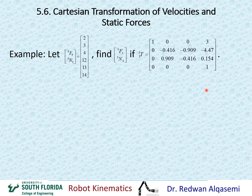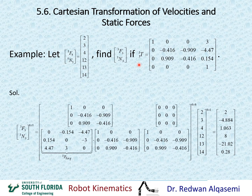For the example, we have defined forces and moments of frame 5 relative to frame 5 as [2, 3, 4] and [12, 13, 14]. We need to find these forces acting on frame 3 relative to frame 3, and we are given the transformation matrix between frames 3 and 5 — the definition of frame 5 relative to frame 3. Taking 5 as B and 3 as A, we use the first transformation equation for forces and moments from the previous slide.